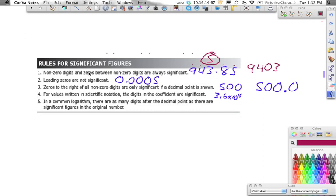And then zeros between non-zero digits are always significant. So if we're looking at this, we know that 9's significant, 4's significant, and 3's significant because they're non-zeros. But that zero, and I like to call this a sandwich zero, it's in between two non-zero digits, so therefore it's significant as well. So in 9,403, you have 4 sig figs.